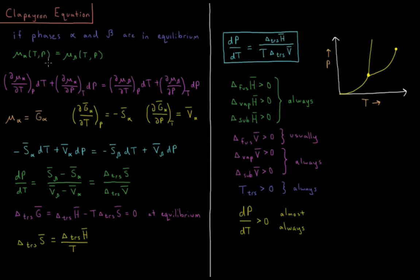What if we're changing the temperature and/or the pressure of the system, and we want them to remain in equilibrium with one another? This means that the partial derivative of the chemical potential of phase alpha with respect to temperature at constant pressure times dT, plus the derivative of mu alpha with respect to pressure at constant temperature times dP, has to equal the same result for phase beta. How the chemical potential of alpha changes with respect to temperature and pressure must be matched by the same sum of derivatives for phase beta.